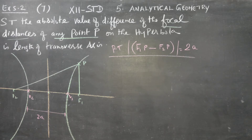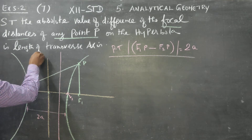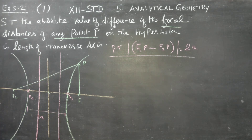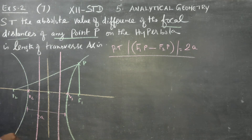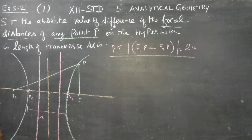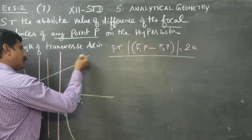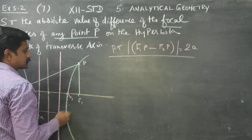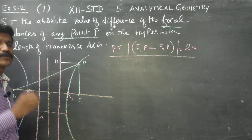Before entering into the problem, I must introduce another concept: a directrix. The definition of conics is the ratio of the distance between any point on the hyperbola and the focus, to the perpendicular distance to its directrix, which is a constant.